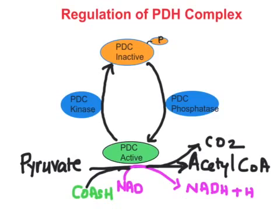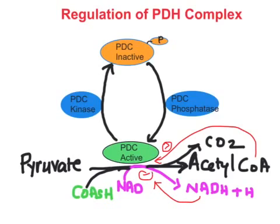The first type is feedback regulation. Whenever there is sufficient accumulation of acetyl-CoA — which is a product of pyruvate dehydrogenase complex — that acetyl-CoA will have a negative effect on the enzyme complex. That is classic negative feedback inhibition. Similarly, whenever there is accumulation of NADH + H⁺, the co-product, it will also have a negative effect on pyruvate dehydrogenase enzyme complex, thereby decreasing its activity.